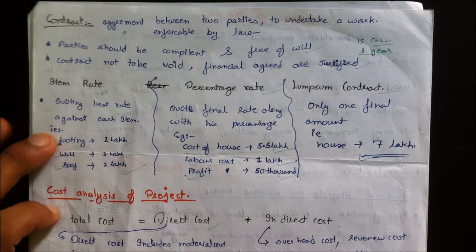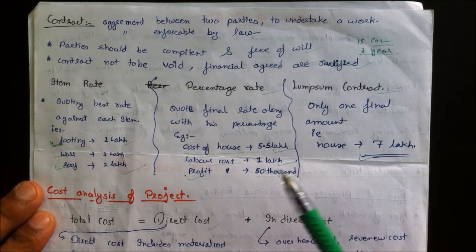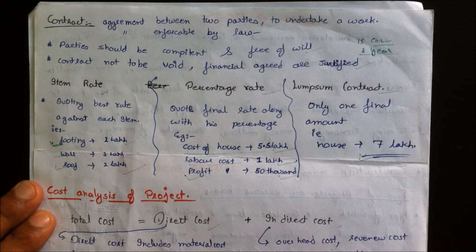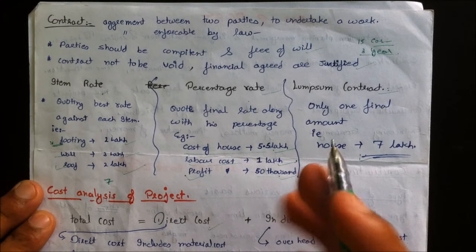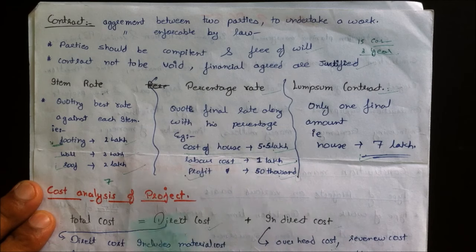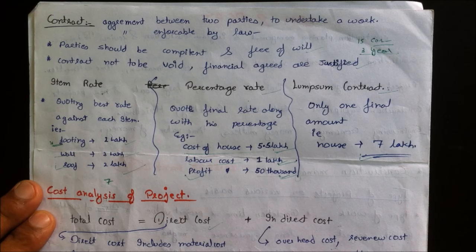Contract types include item rate contract, percentage rate contract, and lump sum contract. In an item rate contract, drawings are available and rates are quoted per item. In a percentage rate contract, the engineer quotes the cost breakdown — for example, house cost 5.5 lakh, labor 1 lakh, and profit 50,000. In a lump sum contract, used by senior contractors, the total value is fixed — for example, building a house for 7 lakhs directly.